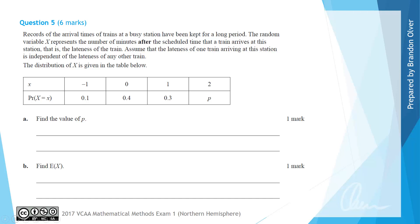For question 5, records of the arrival times of trains at a busy station have been kept for a long period. The random variable X represents the number of minutes after the scheduled time that a train arrives at this station.